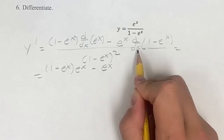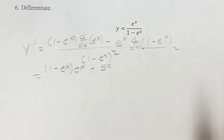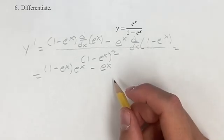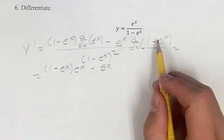Then we get minus e to the x times the derivative of this. The derivative of 1 is just 0 since 1 is a constant, so we can ignore that since we basically have 0 minus the derivative of this.